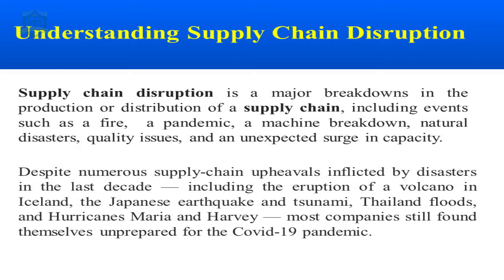Poor quality is also a supply chain problem — leading to machine, raw material, or process problems. For example, during COVID-19, medical equipment supplied from China to countries like India had quality problems — masks and other medical devices. Quality is very important and leads to customer satisfaction. Disruption is a major breakdown or interruption in the production or distribution of supply chain — it can be fire, pandemic, machine breakdown, natural disasters, quality issues, or unexpected surge in capacity.